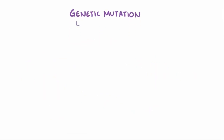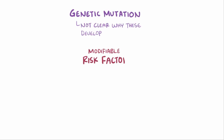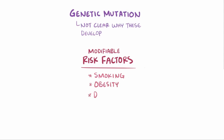Although it's not exactly clear how these genetic mutations that trigger pancreatic carcinoma develop, there are some well-known modifiable risk factors like smoking, which increases the risk by 2–5 fold, obesity, as well as eating a diet high in red meat.